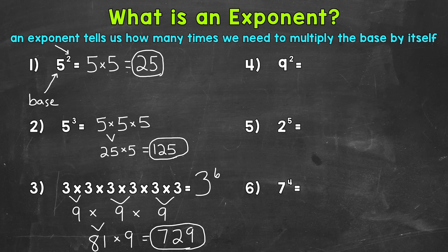Let's move on to number 4, where we have 9 squared. So this means 9 times 9. 9 times 9 equals 81, so 9 squared equals 81.